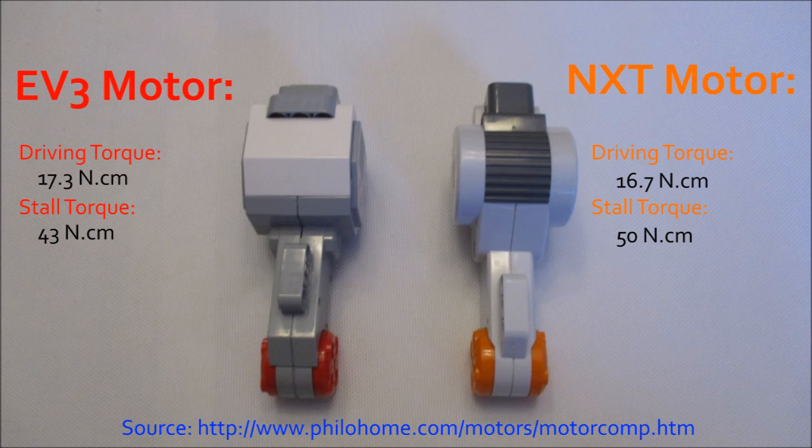Next we'll talk about torque of the motors, and this is where the differences start to become more apparent. I didn't have my own materials to do instrumented testing of the torque, but Philo Herbane—hopefully I'm pronouncing your name right—did a test, and you can find it on his webpage. He found that NXT motors had 50 newton-centimeters of stall torque, whereas the EV3 motors only had 43 newton-centimeters of stall torque, and that's a significant difference.